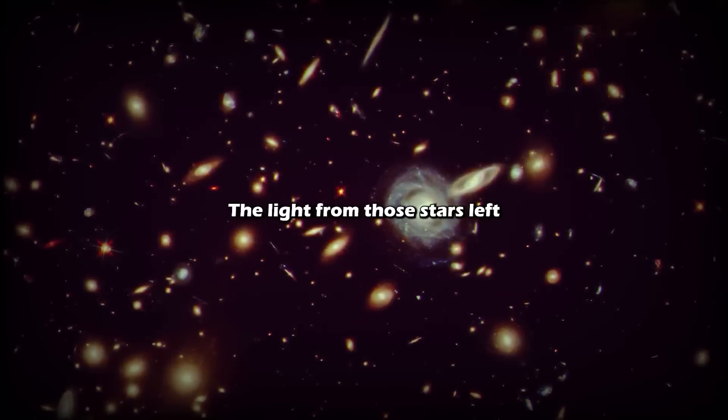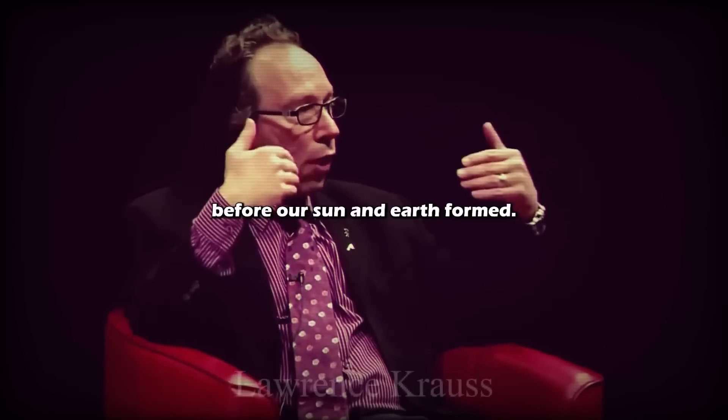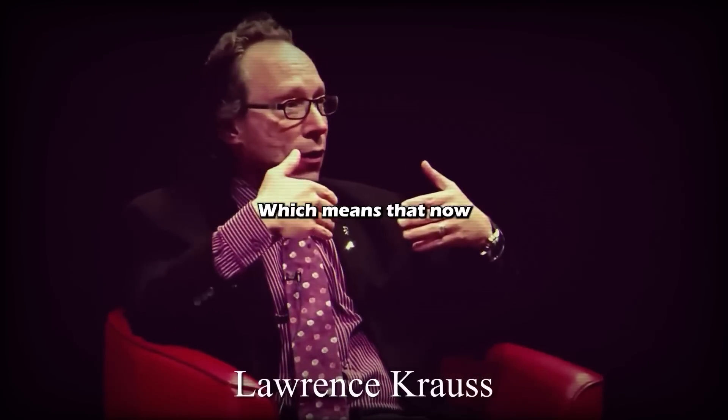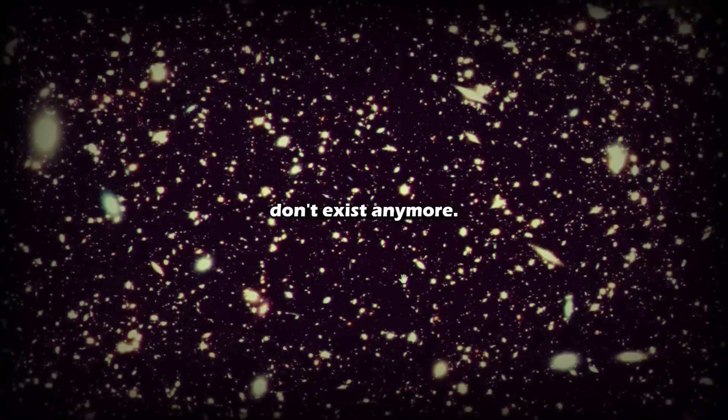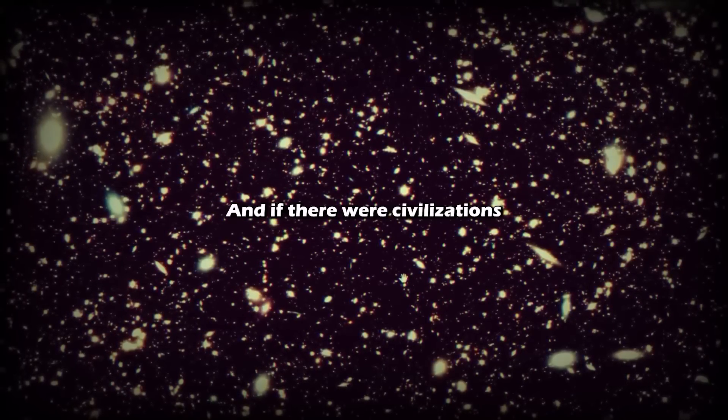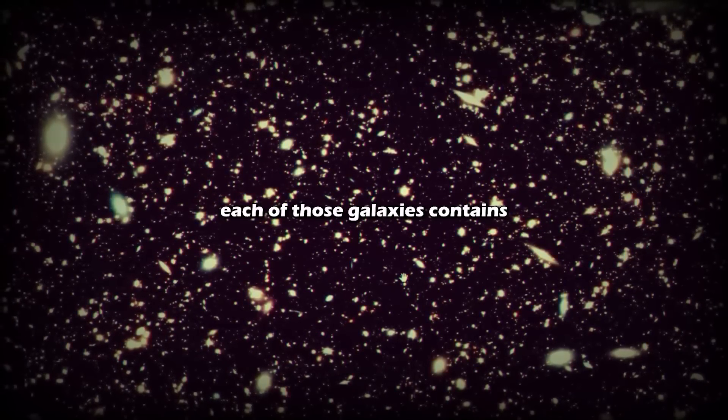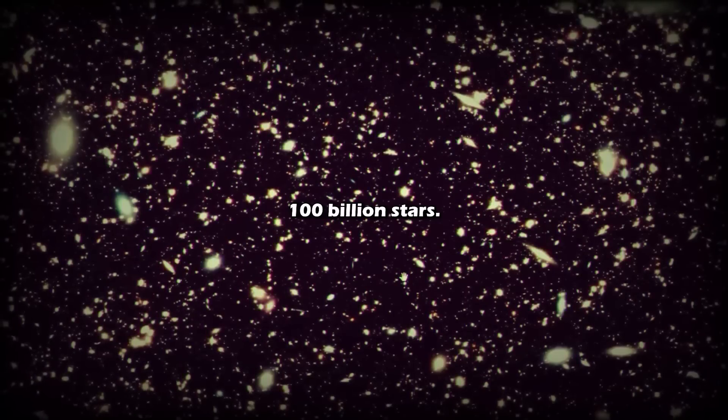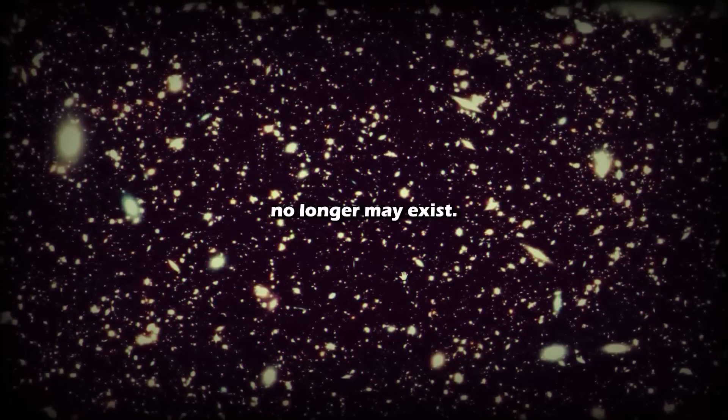The light from those stars left those stars before our sun and earth formed, which means that now many of the stars in that picture don't exist anymore. And if there were civilizations around those stars, each of those galaxies contains 100 billion stars. Any civilization that existed around those stars no longer may exist.